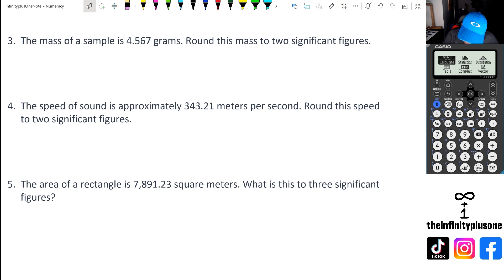So question three, we are looking at two significant figures. So that means we're looking at that four and five. And the number next to five is six. Now remember, six is actually bigger than five. So we have to round this number up. And when we round this up, we're going to get 4.6 grams.